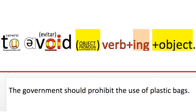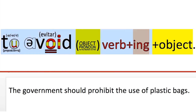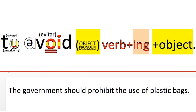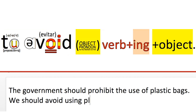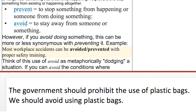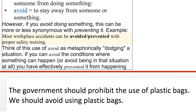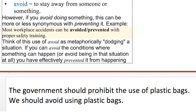The government should ban us from using plastic bags. And if you're going to use the verb 'avoid', make sure you use it correctly. An example would be: we should avoid using plastic bags. So there are some differences between 'prevent' and 'avoid' — I'm just going to scroll through this slowly and you can read this at your leisure.